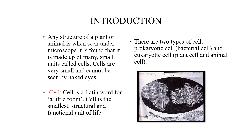Prokaryotic — 'pro' refers to primitive or not well developed; 'karyo' refers to nucleus. So the nucleus is not well developed in those cells. The best example is the bacterial cell. Eukaryotic cells have a well-developed nucleus. The best examples are plant cell and animal cell.